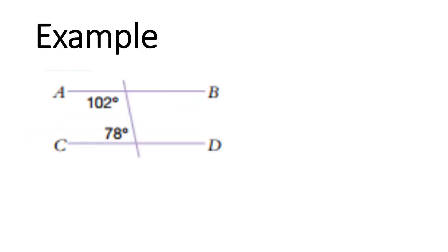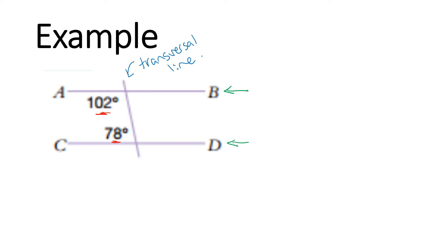Let's have a look at another example. We have two lines going in one direction — line AB and line CD — and these are the two lines that are possibly parallel. Then we have this third line that goes through the other two, and that is our transversal line. We need to look at whether AB and CD are parallel. We have two angles inside the possible parallel lines — 102 degrees and 78 degrees — so we're probably looking at co-interior angles.